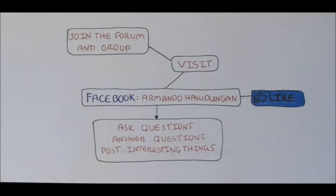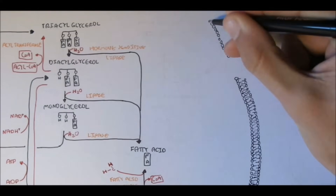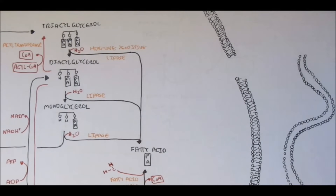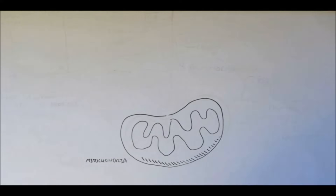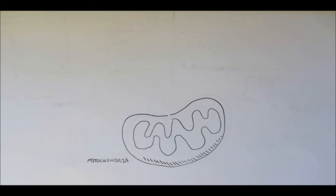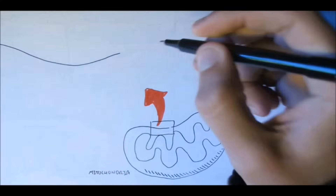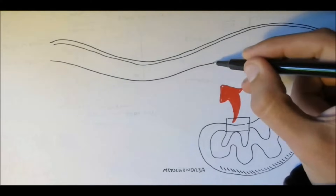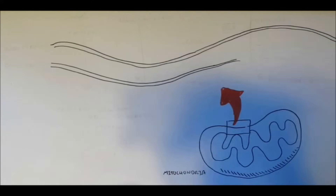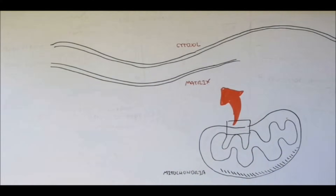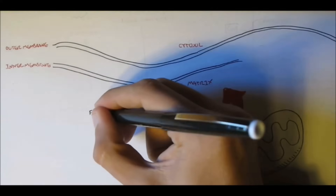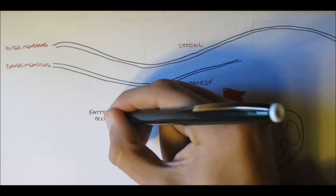As we've discussed previously, fatty acids are synthesized in the cytosol. However, interestingly enough, fatty acid breakdown, or degradation, occurs inside the mitochondria. The mitochondria is made up of two membranes — the outer membrane and the inner membrane. Fatty acids synthesized in the cytosol have to move inside the mitochondria, into the matrix, because fatty acid degradation occurs inside the matrix.